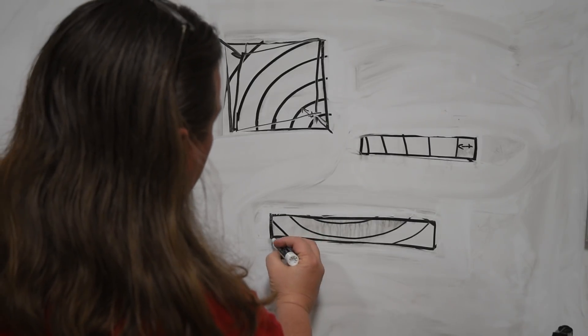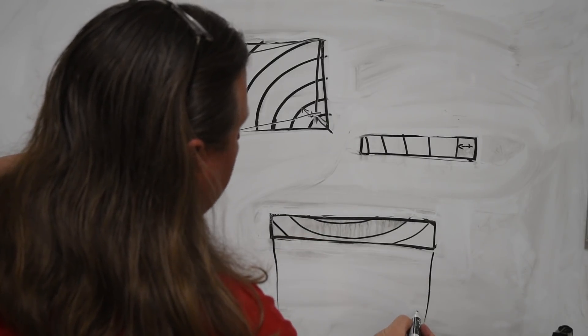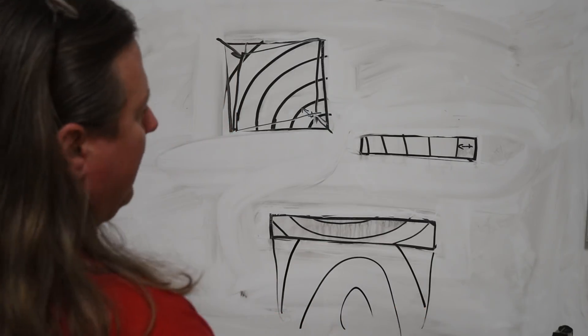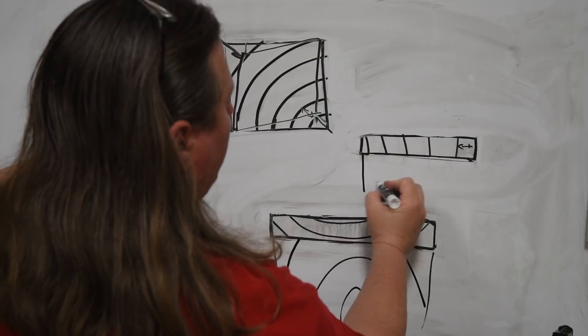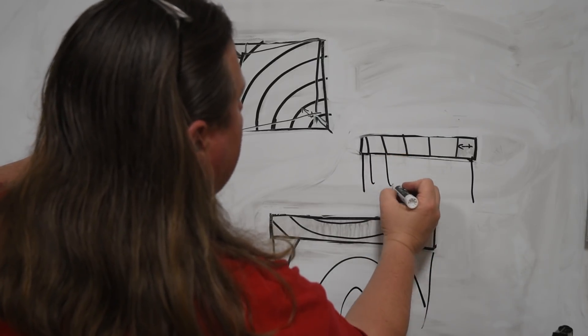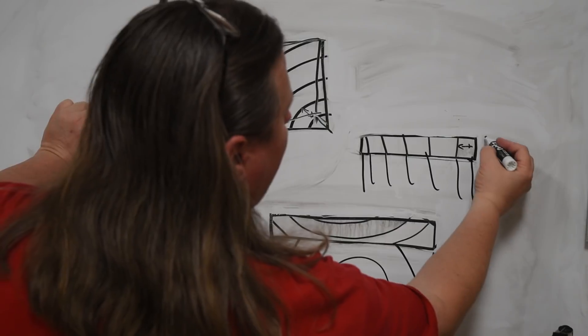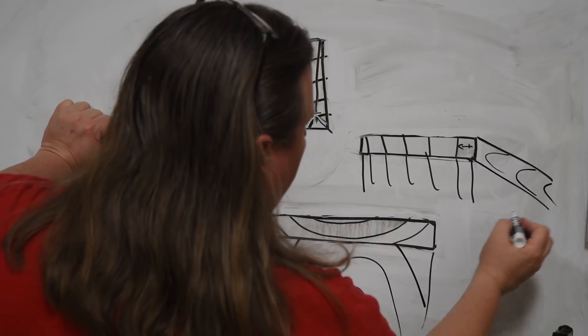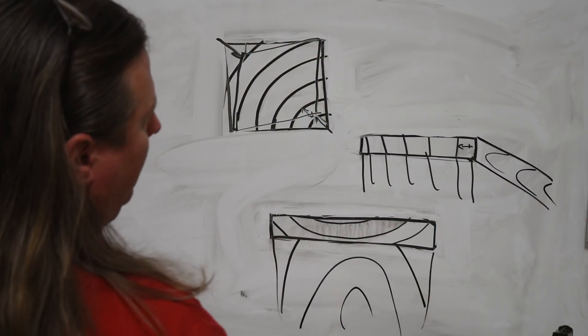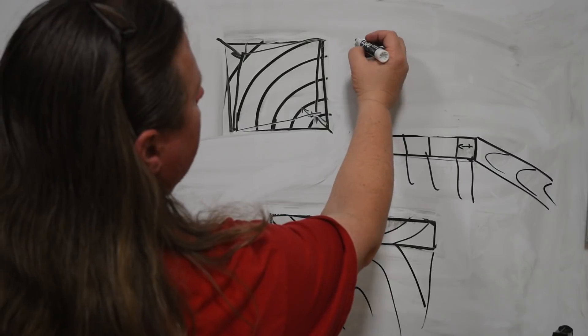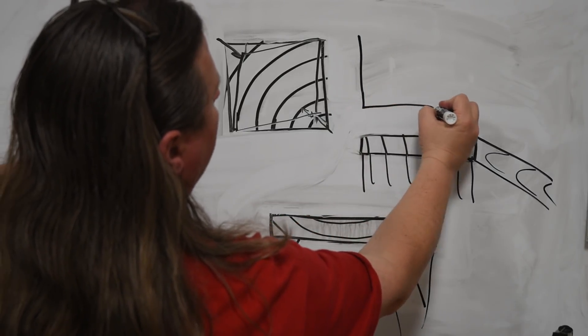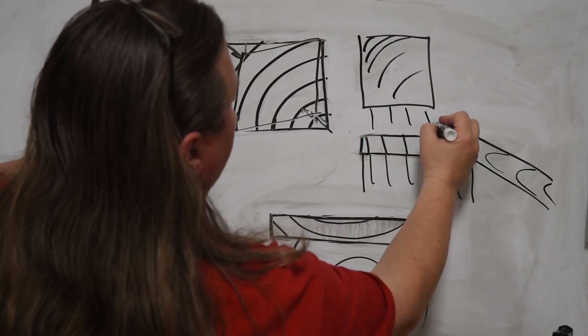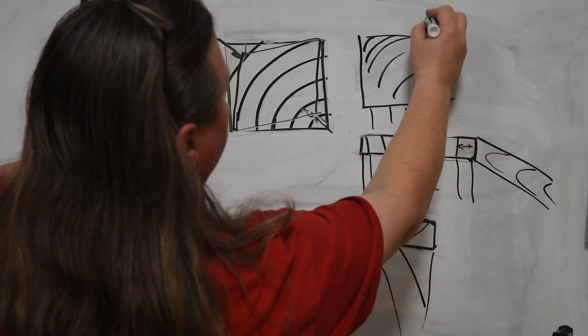This board right here, well, the grain is going to come up and you're going to have those big U's, the cathedrals like that. This board right here is going to have nice straight lines on one side, but on the corner side it's going to have those cathedrals. This board right here is going to have straight lines in every single direction.